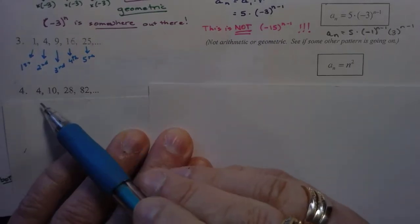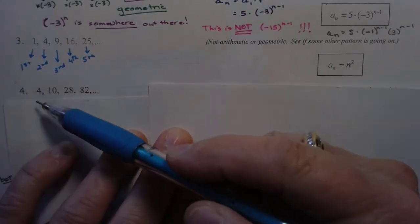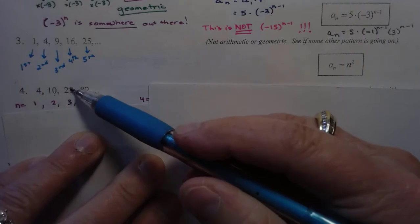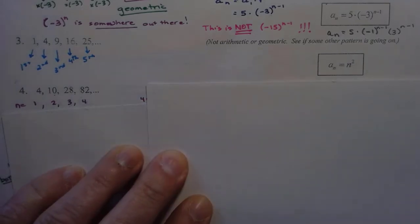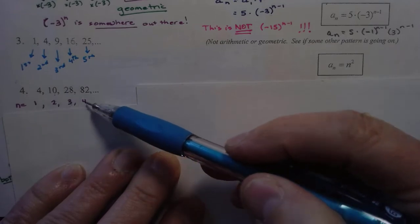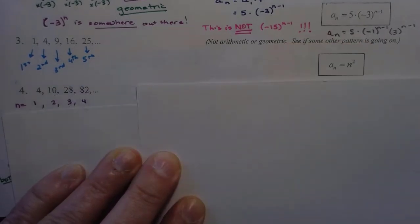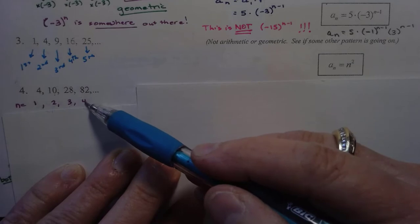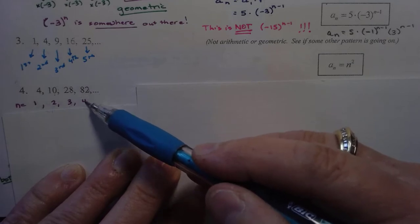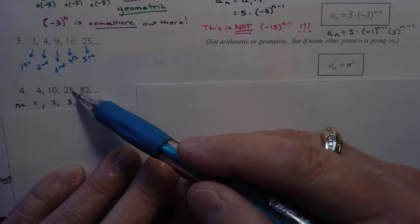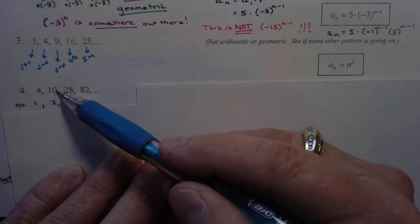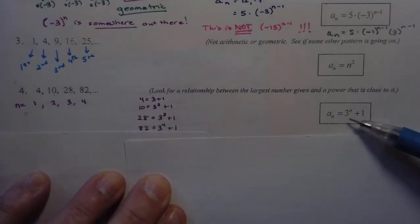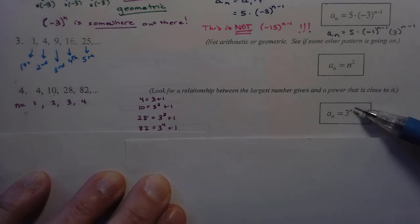Now what do I have here? A lot of even numbers. When n is 1, n is 2, n is 3, n is 4 — let me see if I can make a relationship. 3 to the fourth is 81, and this term is one more than 81. 3 to the third is 27, and this is one more than that. 3 squared is 9, and this is one more than that. So we have found our expression for the sequence: 3 to the n, plus 1.